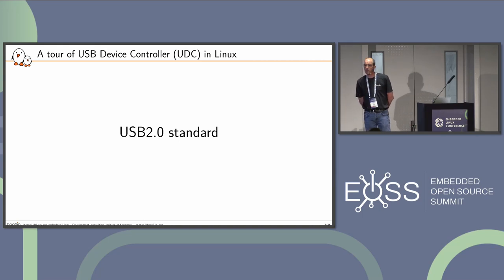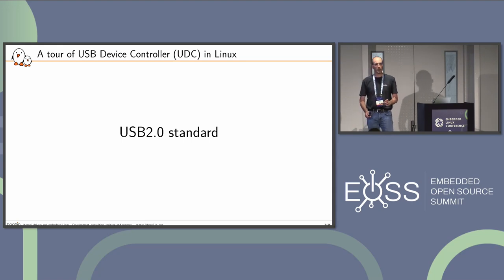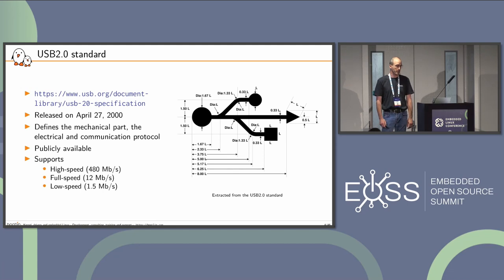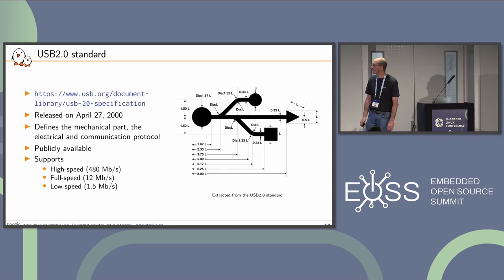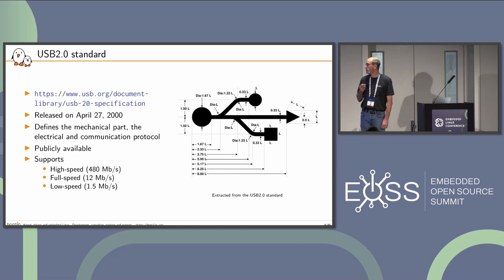I will start talking about the USB standard, focusing on the USB 2.0 standard — not USB 3.0 or the OTG part, just the core USB 2.0. The USB 2.0 standard is quite old; it was released 23 years ago. It defines everything about USB, from the mechanical part to the electrical part and the communication protocols. It is publicly available at USB.org and supports high speed, full speed, and low speed devices.